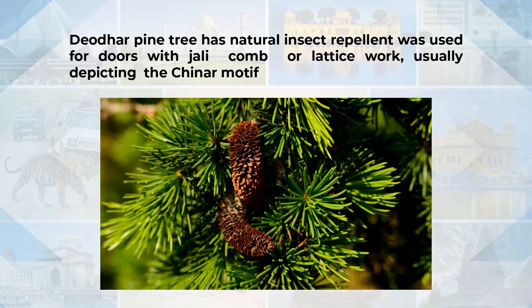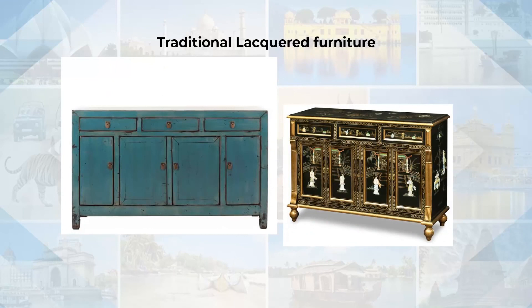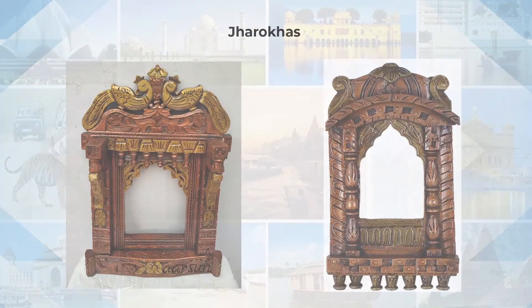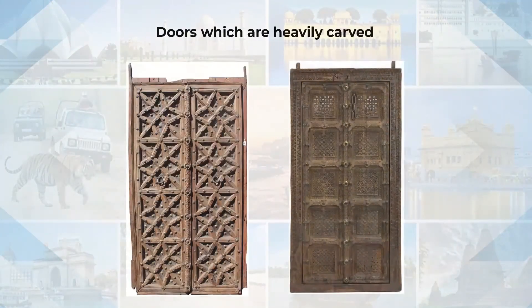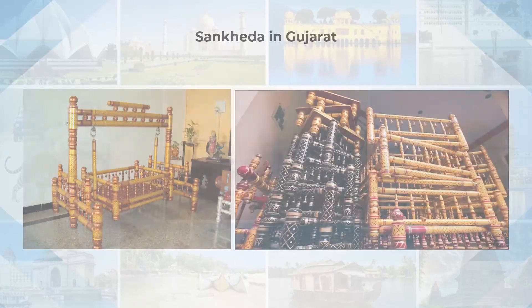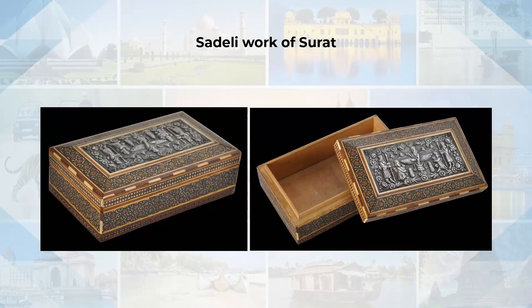The motifs made in Kashmiri woodcraft usually represent the common flora and fauna, especially the chinar trees. In Gujarat and Rajasthan, traditional lacquered furniture is very popular, and heavily carved jharokas and doors are used by people. Sankhleka in Gujarat and Saadeli work of Surat are very popular among Gujarat and Rajasthan.